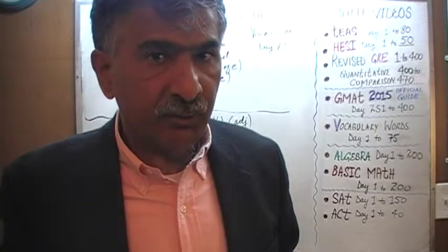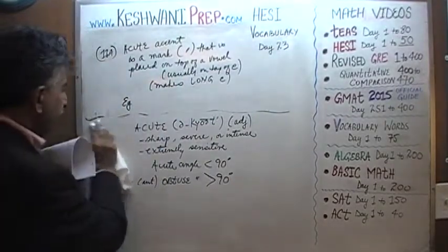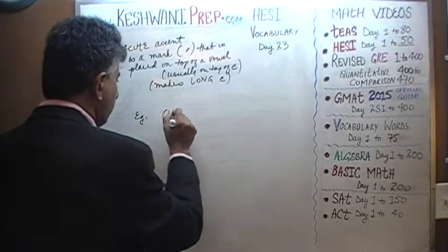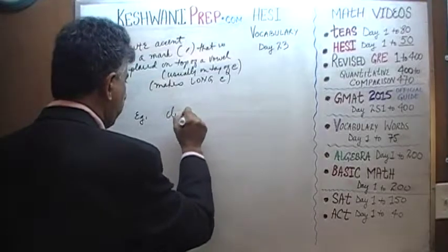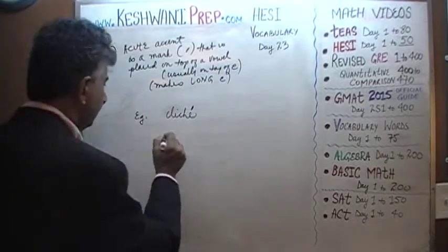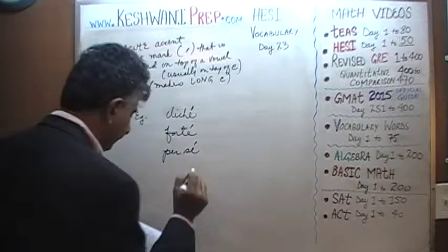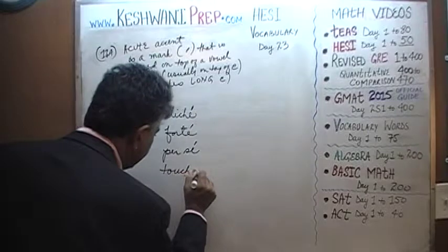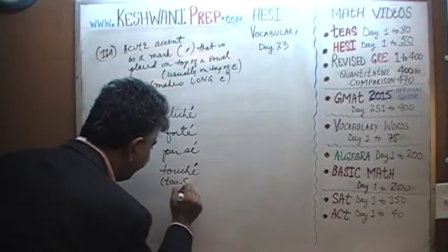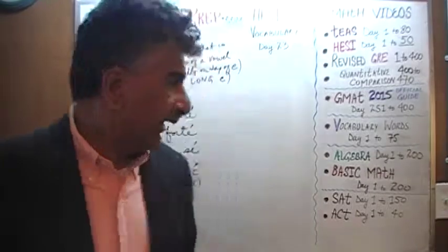Words such as "cliché" — you see the acute accent? How about words such as "forte" — your strong point — or "per se," or "touché." If somebody makes a good point in an argument, we say touché. All of these have an acute accent. It's a long E sound: not "forte," not "touche," not "cliche" — it's "forte," "per se," "touché," "cliché." The long E is what you indicate with an acute accent.